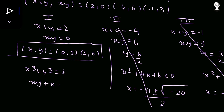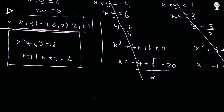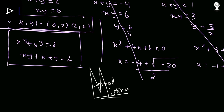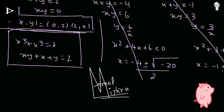Therefore, the only real solutions are (x, y) = (0, 2) or (2, 0), which satisfy both x³ + y³ = 8 and xy + x + y = 2. If you have another method, feel free to comment below, or email or message me on Instagram or Discord — the links are in the description.